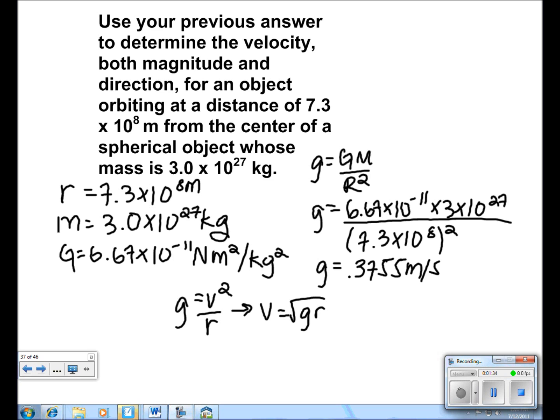In order to solve for v, we plug in the numbers, so we get v is equal to the square root of 0.3755 times 7.3 times 10 to the 8th. And we get an answer of 16,556.42 meters per second.